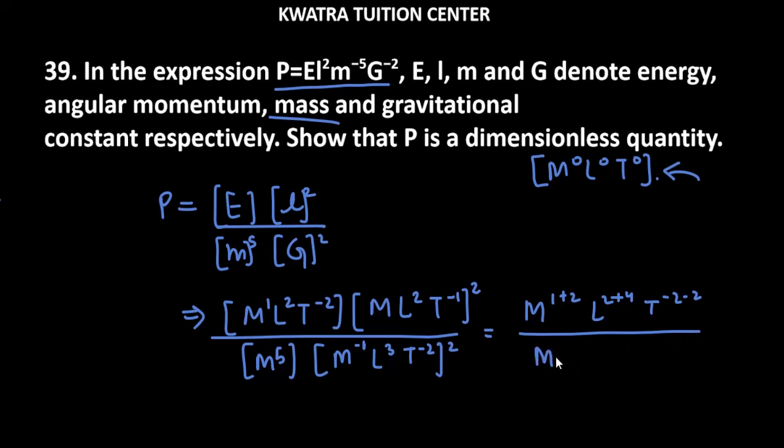In the denominator, we have M⁵ minus M² which is M³. L will be 6, and T will be minus 4. If you match numerator and denominator, they're the same: M³L⁶T⁻⁴ over M³L⁶T⁻⁴.